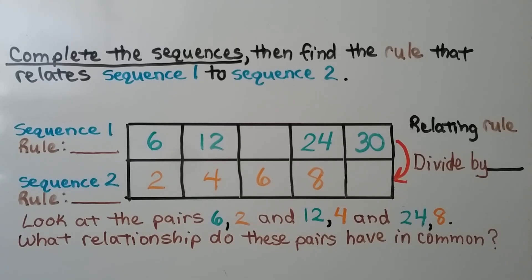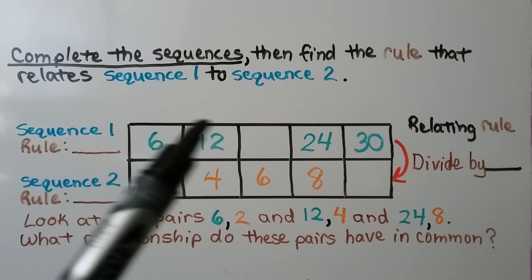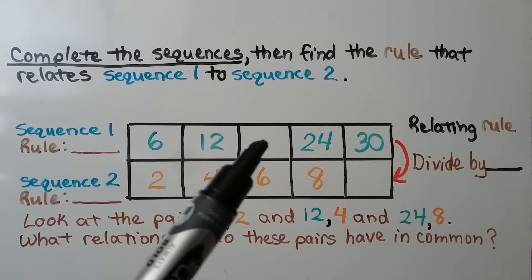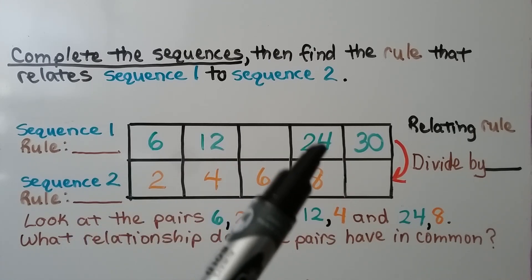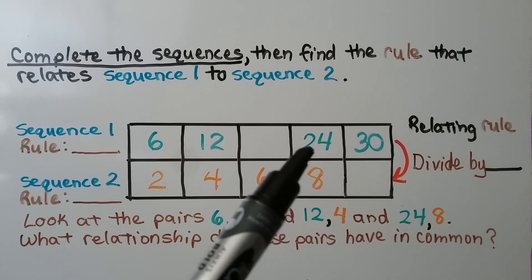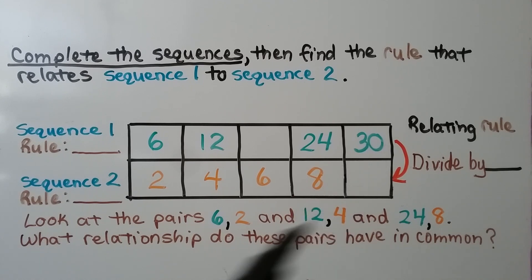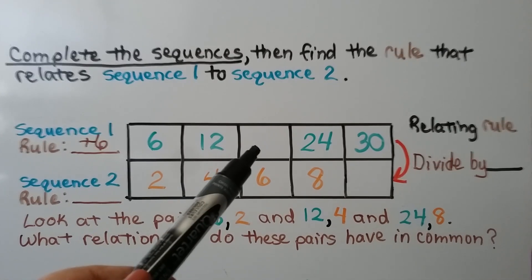Let's try it again. Let's complete the sequences, then find the rule that relates sequence 1 to sequence 2. We look at the relationship between 6 and 12 — that could be 6 times 2, or 6 plus 6. But 24 plus 6 is 30, and 24 times 2 would be 48, not 30. So the rule is plus 6 for sequence 1, and the missing term is 18.